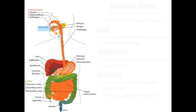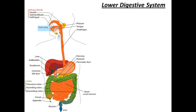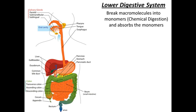Moving on, the next set of organs are grouped into the lower digestive system. The lower digestive system is where most of our digestion actually takes place — that's where much of the chemical digestion occurs. In the small intestine primarily, we're breaking large molecules down into smaller molecules. That's what we call chemical digestion. There's also the function of absorption, where those smaller molecules are absorbed into the blood and carried around. Terms like macromolecules and monomers are ones we will define within the next few days.